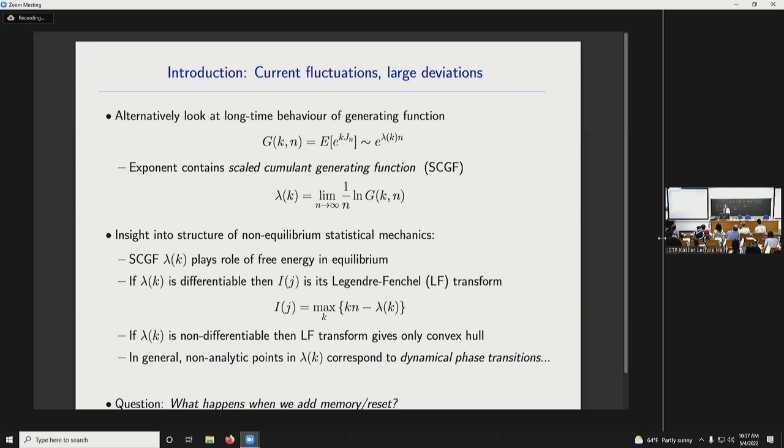And these things might seem a bit formal, but actually they give you some insight into the structure of non-equilibrium statistical mechanics. In particular, the scaled cumulant generating function plays a role that's analogous to the free energy in equilibrium. And it's related to the rate function by Legendre transform. In particular, if it's differentiable, then by Legendre-Fenchel transform, I get the rate function in this way. If the scaled cumulant generating function is not differentiable, then the Legendre-Fenchel transform only gives, in fact, the convex hull. And in general, just like thinking back to equilibrium, non-analytical points in lambda k correspond to phase transitions. Now they correspond to so-called dynamical phase transitions.